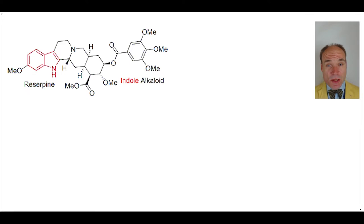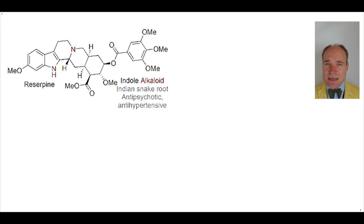Reserpine is an indole alkaloid. This means a natural molecule that contains basic nitrogens. It comes from the Indian snake root and has antipsychotic and antihypertensive properties.